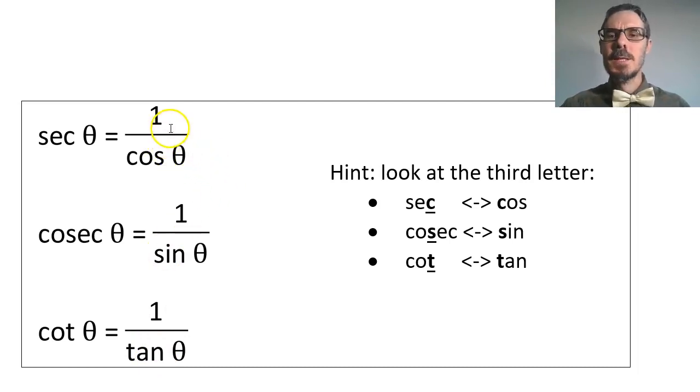Why bother? Because it means we can write things like this with a little bit less messiness. We don't have to have fractions in there. When we mean one over cos, we can just write sec.